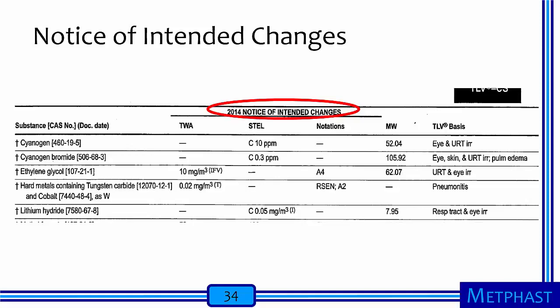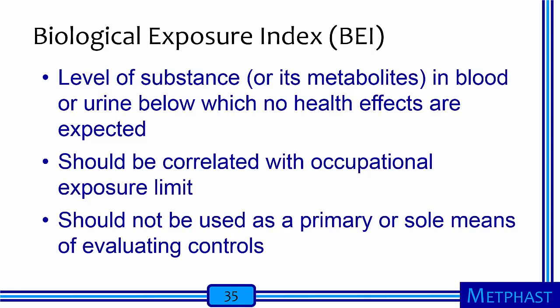The booklet of TLVs and BEIs from ACGIH also has a section called Notice of Intended Changes, which importantly identifies substances for which new limits have been set — either for new substances or for lowering or changing of threshold limit values. A Biological Exposure Index, or BEI, represents a concentration of a substance in blood or urine below which no adverse health effects are expected. BEIs should correlate with occupational exposure limits but should not be used as a primary or sole means of evaluating the effectiveness of exposure controls.